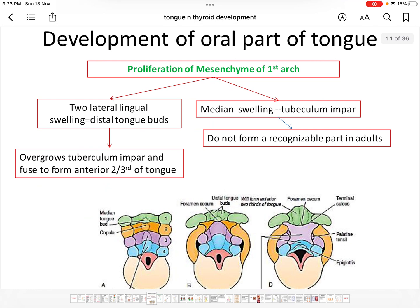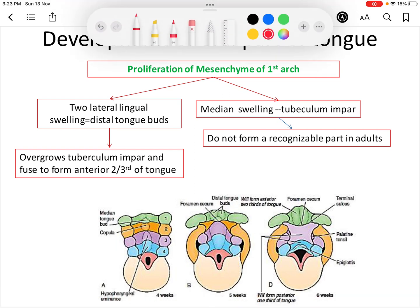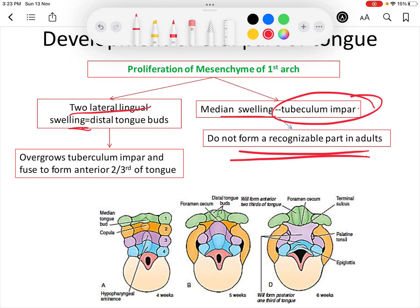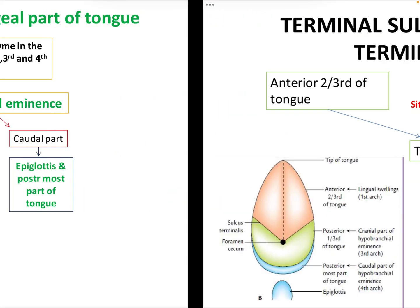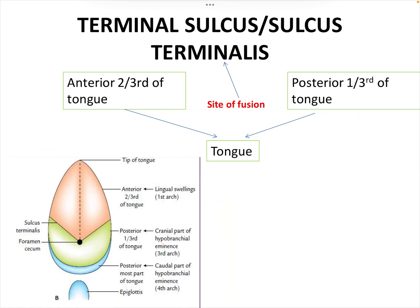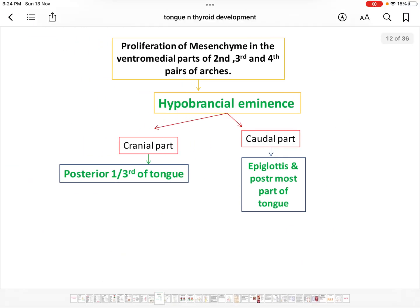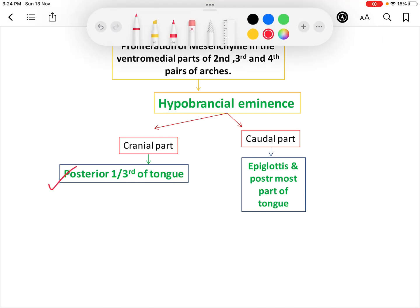The oral part or anterior two-thirds of the tongue develops from two lateral lingual swellings and one midline swelling, the tuberculum impar, which does not form any recognizable structure. The two lingual swellings overgrow and fuse with each other to form the anterior two-thirds. The hypobranchial eminence forms in relation to the second, third, and fourth pharyngeal arches and gives rise to the posterior one-third of the tongue.